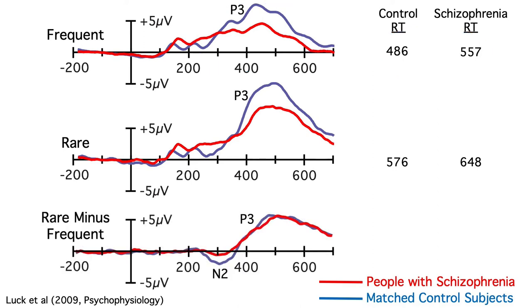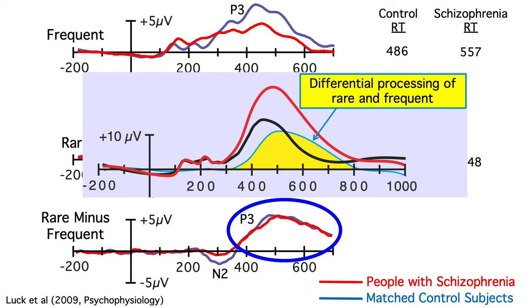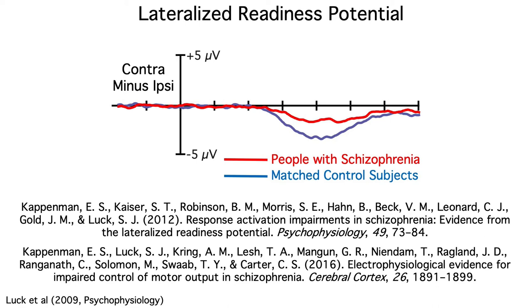And if we look at the rare-frequent difference waves, we see almost identical P3s in the two groups. The control subjects show an N2 that's largely missing in the schizophrenia group, but there was absolutely no group difference in the P3 wave. We can use the logic of difference waves to draw a very strong conclusion from this study. Because you can't have a rare-frequent difference until you've perceived and categorized the stimulus, the finding of equivalent timing of the rare-frequent difference in people with schizophrenia and control subjects tells us that the two groups perceived and categorized the stimuli equally quickly. The difference in response time must therefore reflect some kind of post-categorization slowing, perhaps in response preparation or execution. Consistent with this hypothesis, we found a major disruption of the lateralized readiness potential in the schizophrenia group.